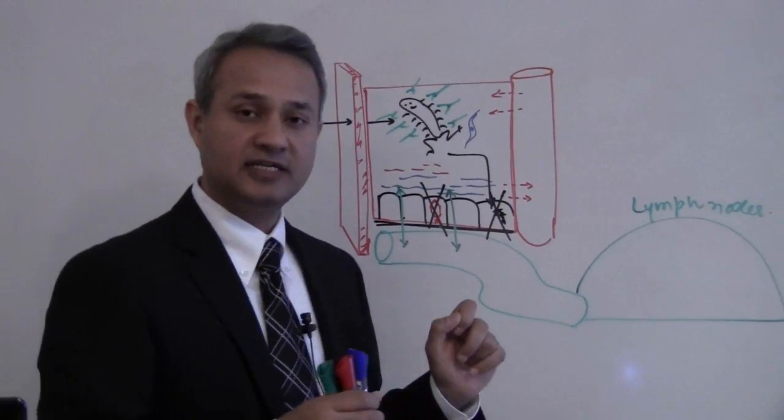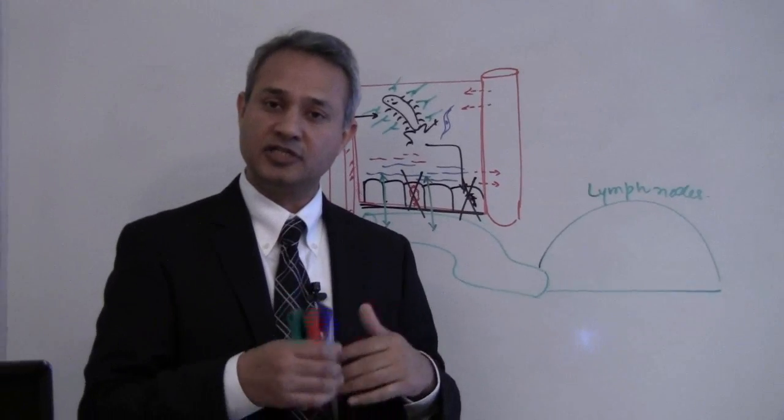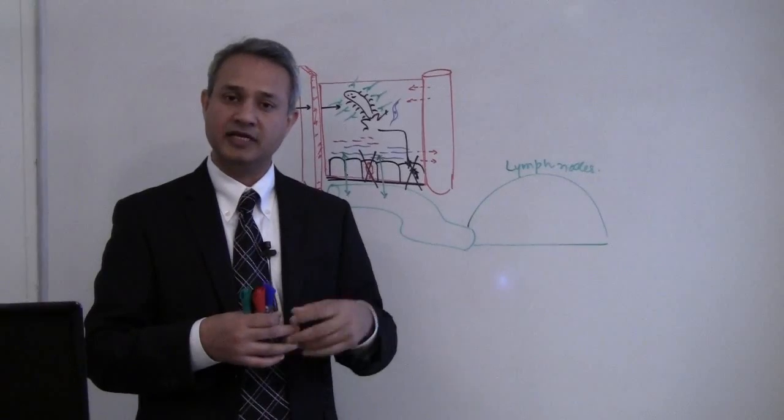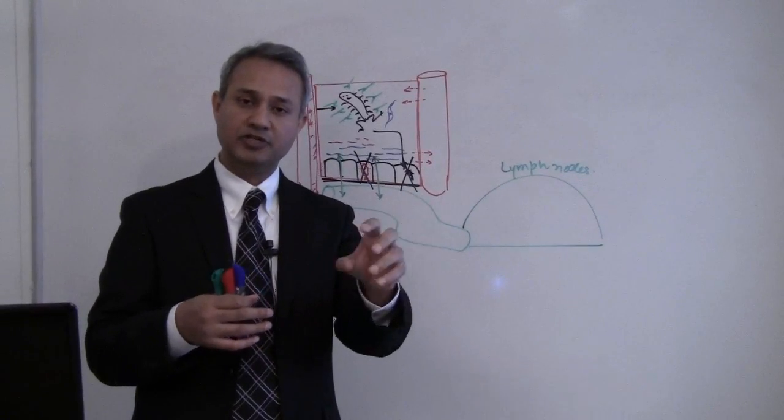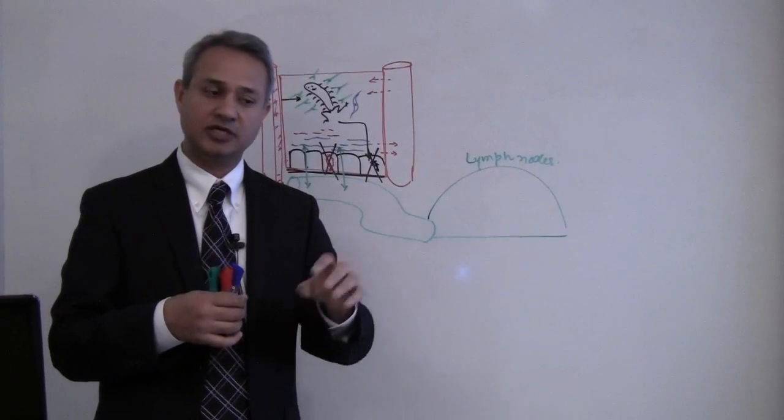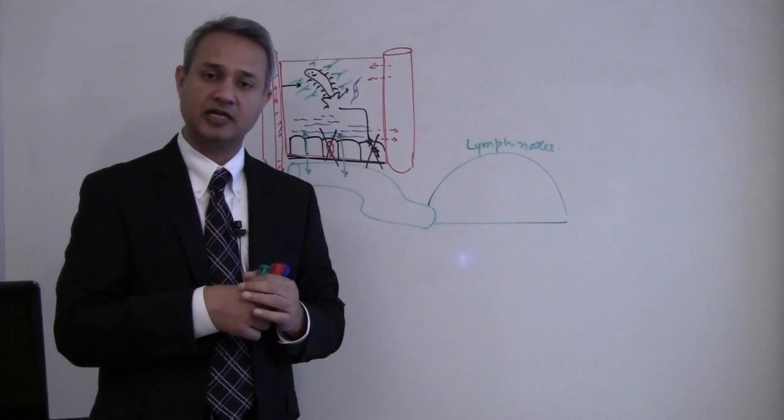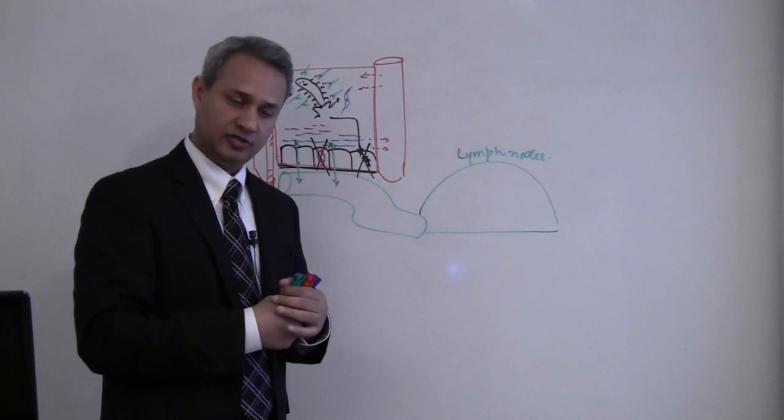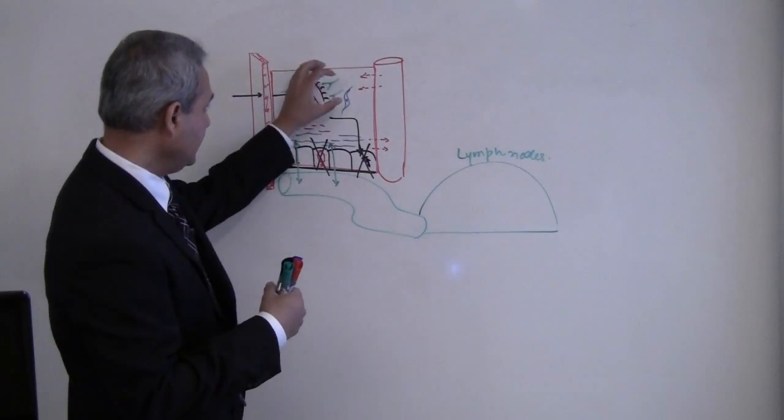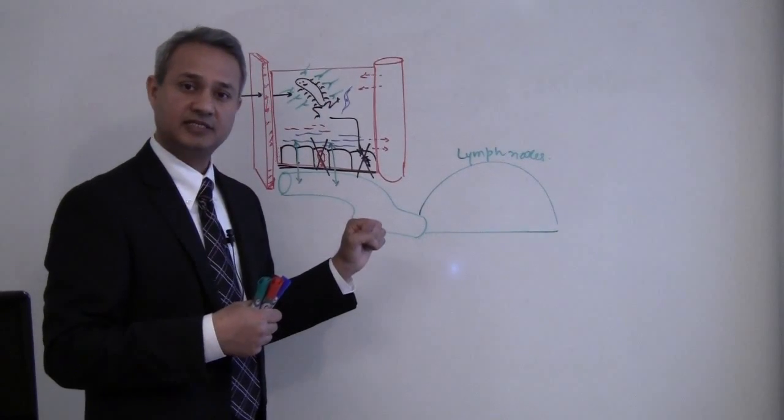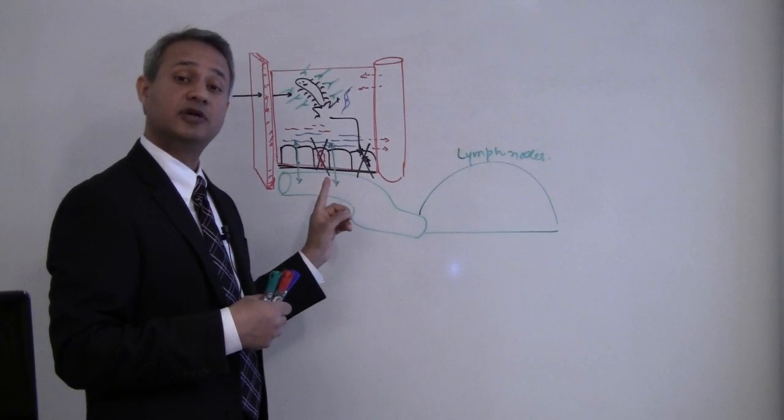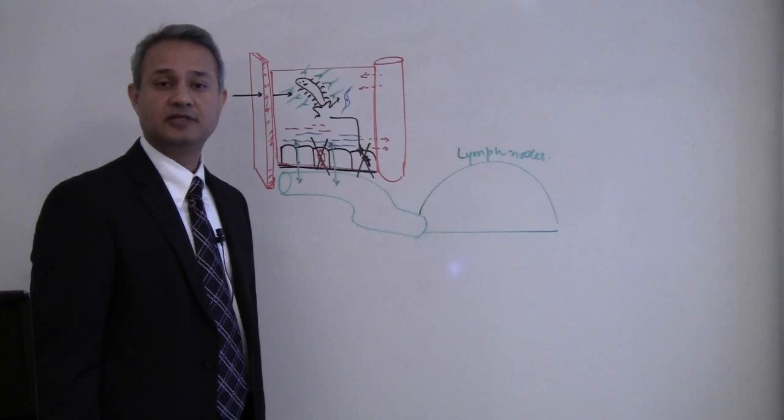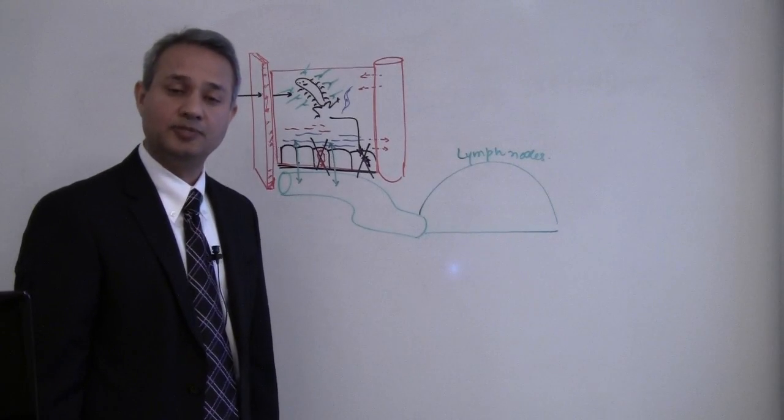If a pathogen is outside the cell, then our body can do certain things. It can have complement system activated. It can have immunoglobulins come in. It can cause the macrophages and other things to come and phagocytose it. Dendritic cells can phagocytose that. Similarly, B cells can do it, T cells can do it, natural killer cells can do it. So there are many cells which can capture and kill these bacteria. But if the bacteria or virus has already gotten into the cell, then the options are less.